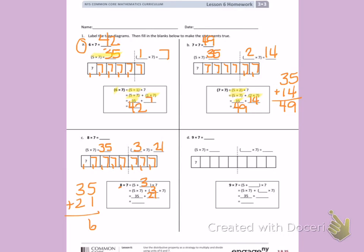5 plus 1 is 6, 3 plus 2 is 5, giving me a total of 56. 8 times 7 equals 56.